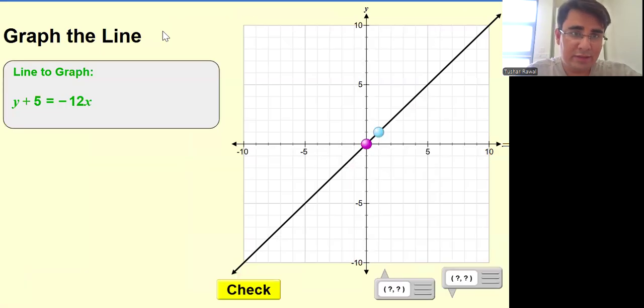Welcome to level 6, guys. This is y + 5 = -12x. I'll shift the -5 to the other side. What I'll be getting is y = -12x - 5.